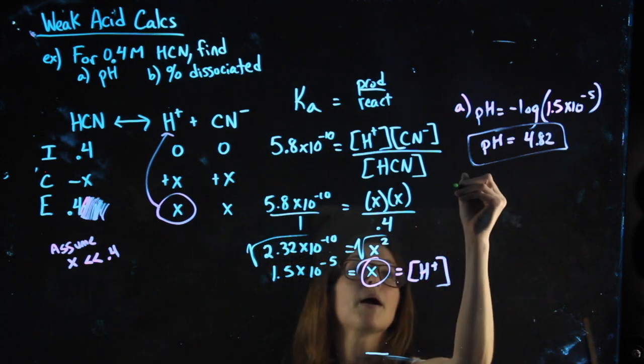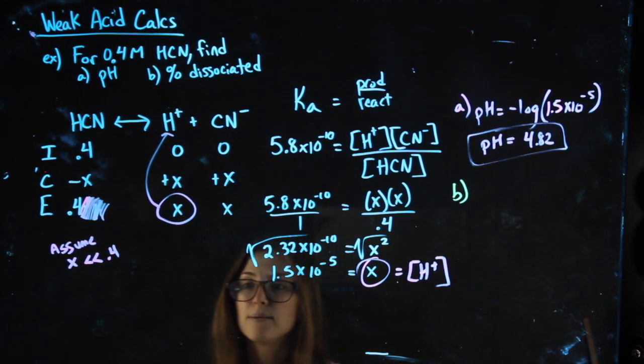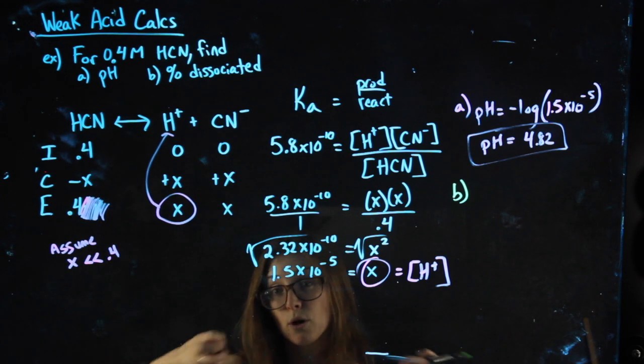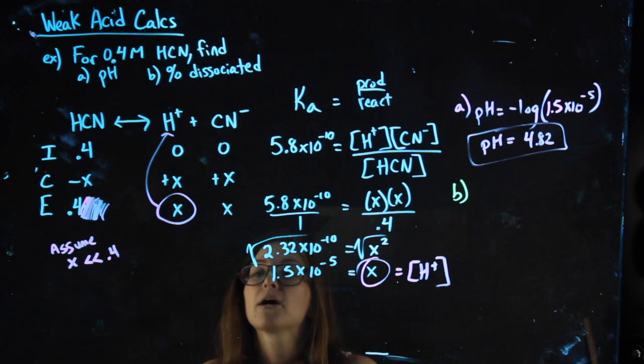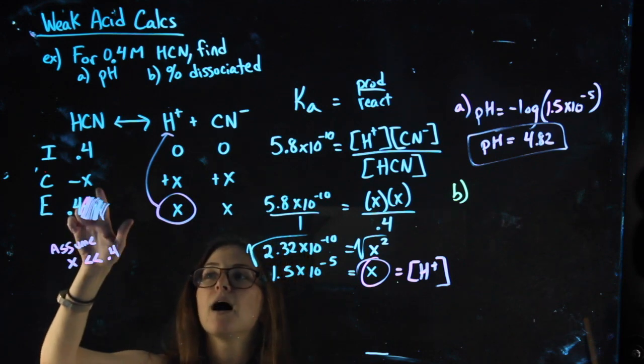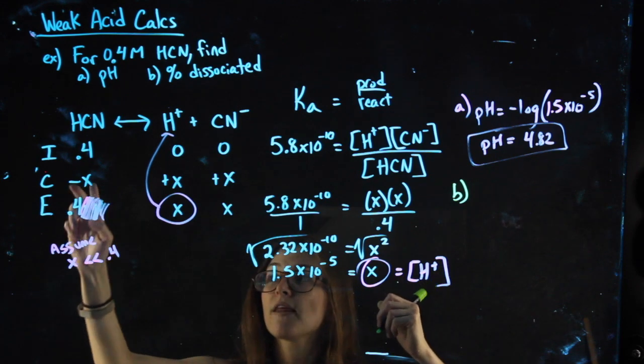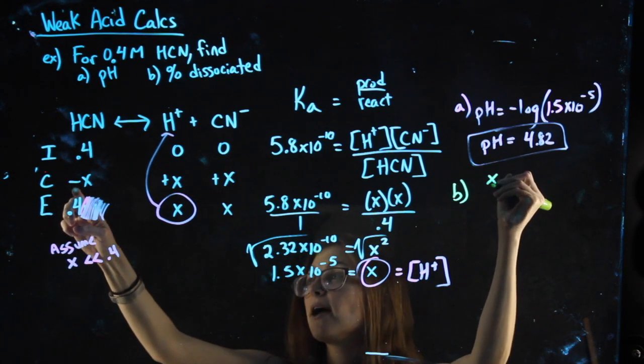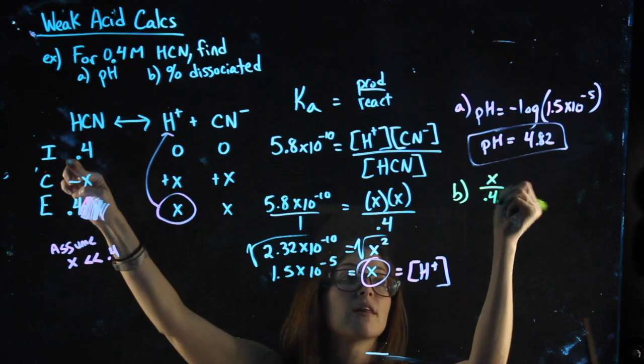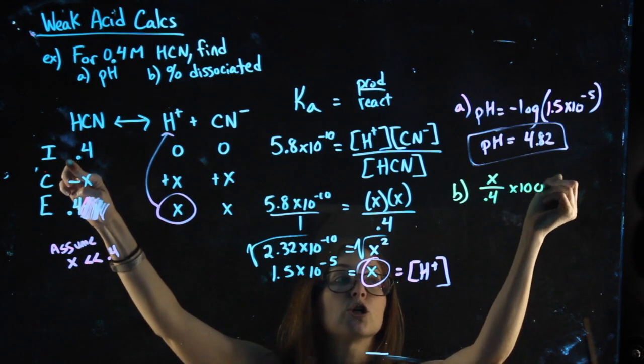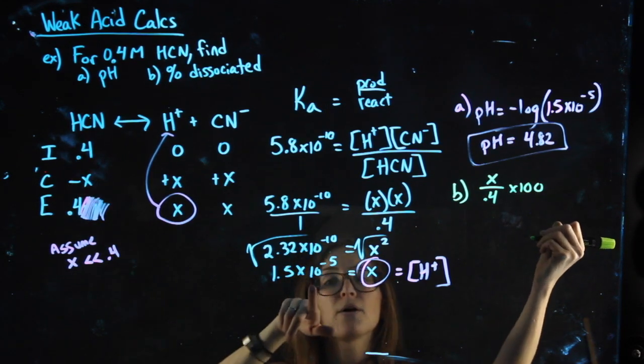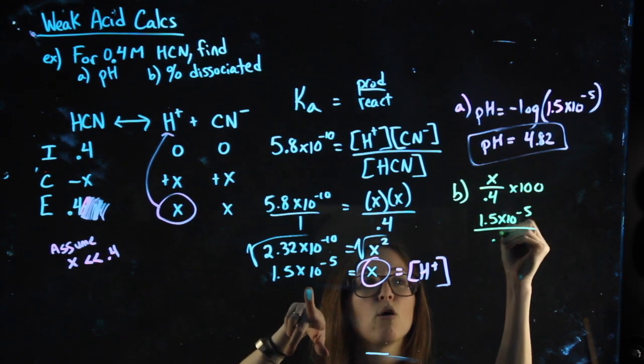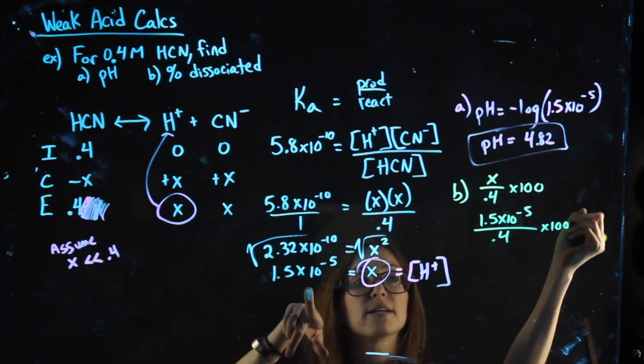For part B, my percent dissociated, I'm saying how much of the 0.4 actually broke down. We know it should be really small. We know it should barely dissociate. I'm always going to take the part that went away minus X, it's going away, so I'm always going to take the part that went away over what I started with times 100. The part that went away is this 1.5 number, 1.5 times 10 to the negative 5th, over what I started with, and don't forget the times 100.